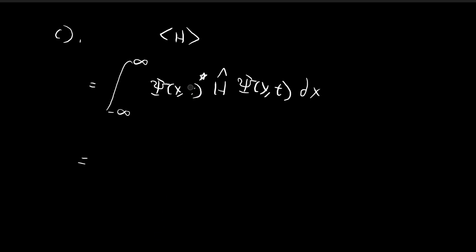Before moving on, I'm going to change this expression up a bit. Instead of ξ(x,t), I'm going to use ξ(x,0) instead. The reason I can do this is because the expected value of the Hamiltonian doesn't change as time goes on. I could do this calculation for whatever value of t and it will give the same answer. So I'll choose ξ(x,0) because it's a lot easier to work with — you don't need to deal with all the t terms. Both ξ(x,0) and ξ(x,t) give the same answer.